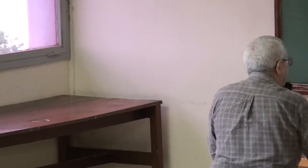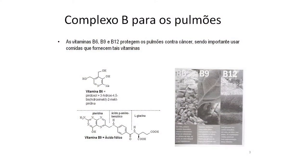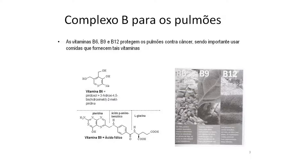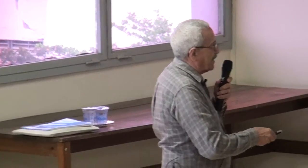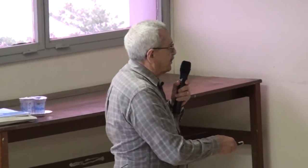Dando ênfase à diversidade estrutural, vejam outras moléculas extremamente importantes: a vitamina B6 e a vitamina B9, que são vitaminas extremamente importantes para a nossa vida. Para quem não se alimenta bem, essas vitaminas fazem falta. Há uma diversidade estrutural notável entre elas. A vitamina B9, também conhecida como ácido fólico, é formada a partir do ácido para-aminobenzoico e outro aminoácido, sendo extremamente importante para a vida.